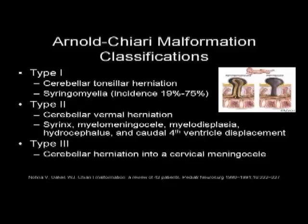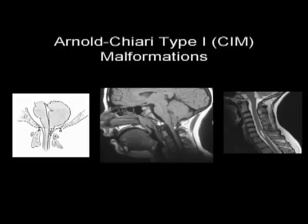These are the classifications that Rich just went through. We're going to be focusing, for the most part in the research I'm going to be presenting, on Type 1 Chiari, which typically presents in early adulthood. As Rich mentioned, Type 3 is quite rare. For the purposes of our research project, we define Chiari malformation as a five millimeter or greater descent of the cerebellar tonsils below the basion-episthion line, which is at the base of the skull. Between 40 and 80 percent of individuals with Chiari malformations will have comorbid syringomyelia.